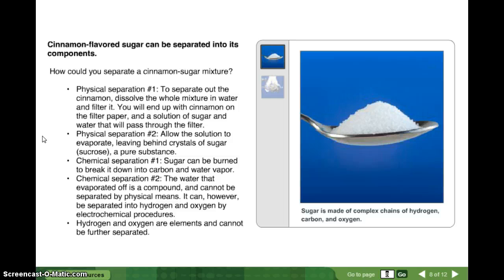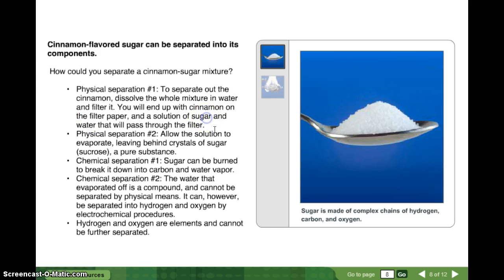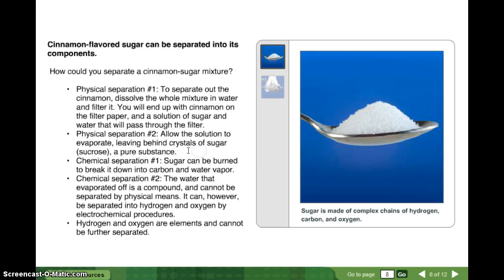Cinnamon-flavored sugar can be separated into its components. How could you separate a cinnamon-sugar mixture? Physical separation number one. To separate out the cinnamon, dissolve the whole mixture in water and filter it. You will end up with cinnamon on the filter paper and a solution of sugar and water that will pass through the filter. In other words, you put it in water and you put it through a coffee filter, and the cinnamon will stay on the coffee filter. The sugar and the water will pass through because the sugar is dissolved. Physical separation two. Allow the solution to evaporate, leaving behind crystals of sugar, sucrose, a pure substance. So far, if I'm just talking about the cinnamon, sugar, and water, is it a mixture or pure substance? It's a mixture. How do you know? Because we separated it into cinnamon, sugar, and water by only using physical separation, like a physical phase change, or we used a filter, which is also a physical change.